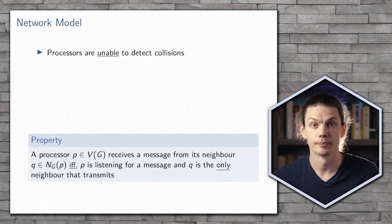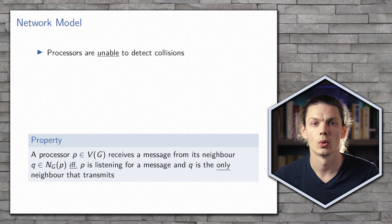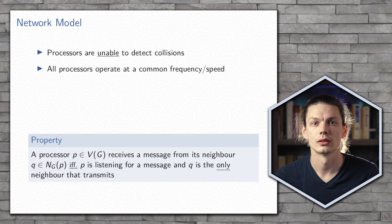This can be summarized in the following property: a processor will only receive a message if it is listening for a message, and exactly one of its neighbors is transmitting a message.